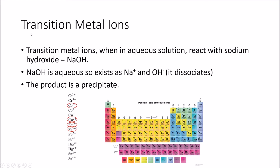How does this relate to transition metal ions? Transition metal ions, when aqueous — that is, dissolved in water — will react with sodium hydroxide (NaOH). NaOH is also aqueous, so it exists as Na+ and OH- when in water. This is called dissociation — the compound splits into its constituent ions, which for NaOH are Na+ and OH-.